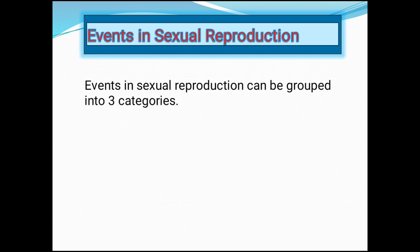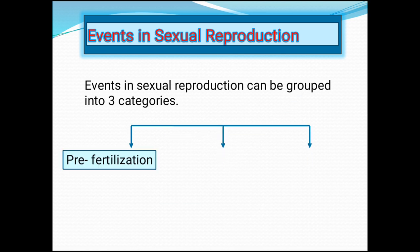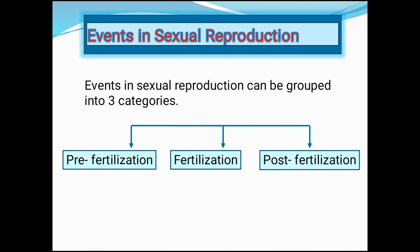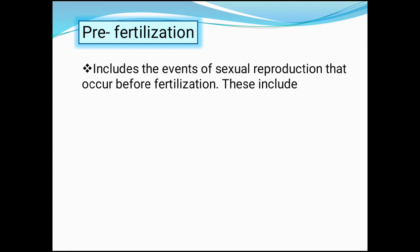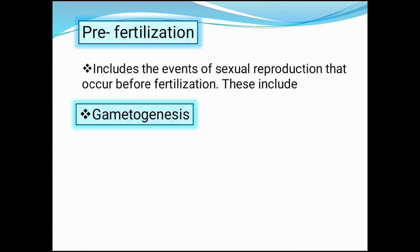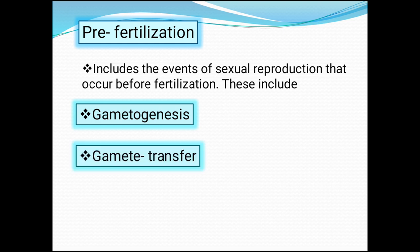Let us see what are the events in sexual reproduction. Events in sexual reproduction can be grouped into three categories: the first one is pre-fertilization events, the second is fertilization events, and the third is post-fertilization events. Pre-fertilization events include gametogenesis and gamete transfer.